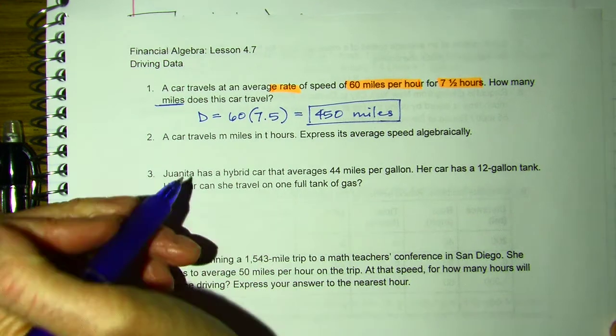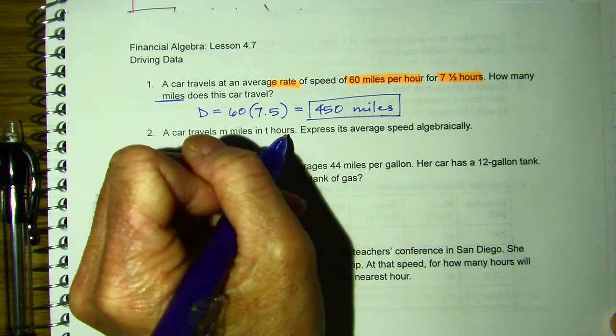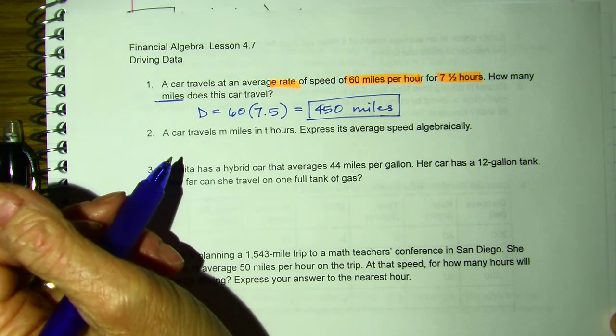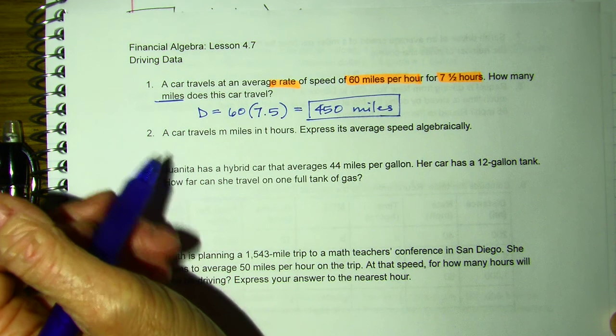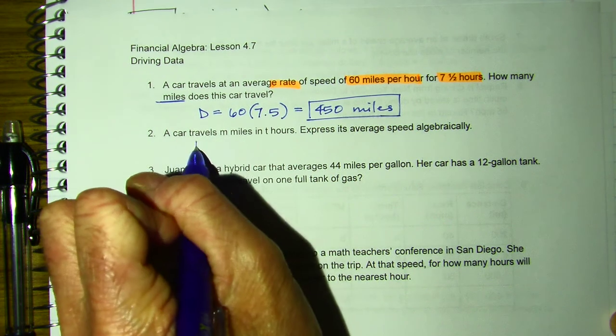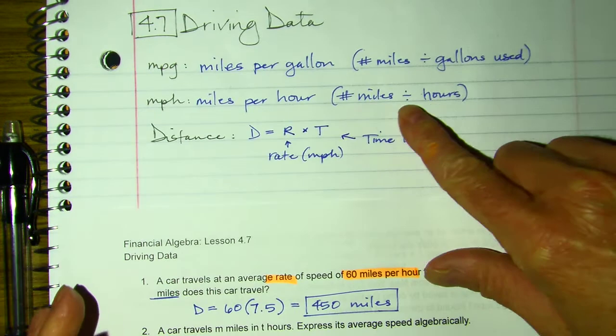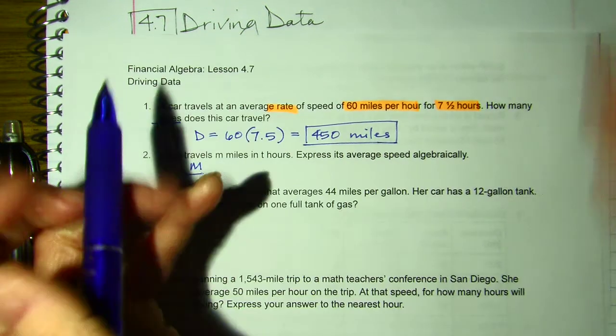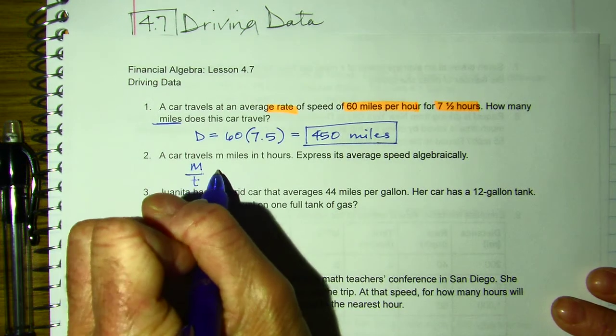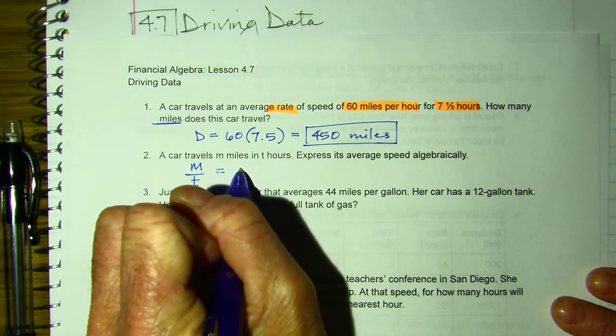Next one, a car travels in miles and T hours, express your average speed algebraically. So miles divided by the number of miles divided by your hours, and that will equal my average speed.